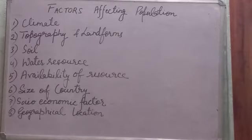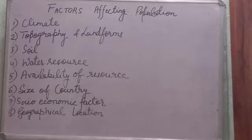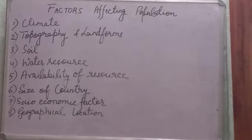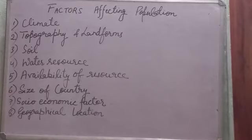Socio-economic factors are also dominant in determining the distribution of population. Economic factors like agriculture and industrial production, along with social and political factors like healthcare facilities, training, and research centers, all contribute to population distribution.